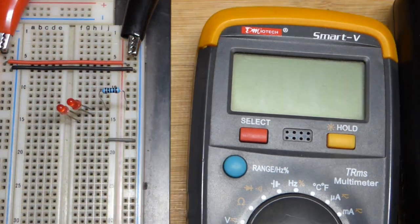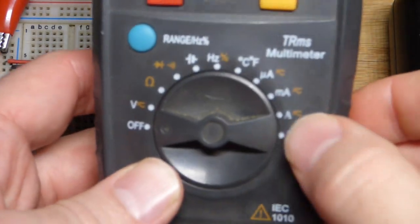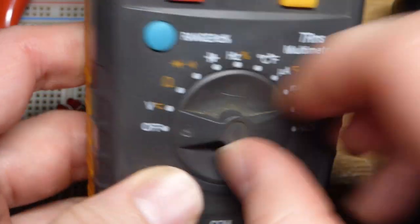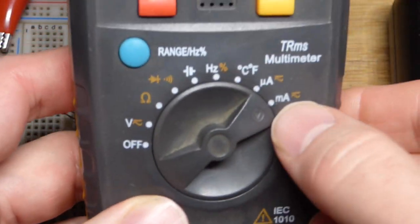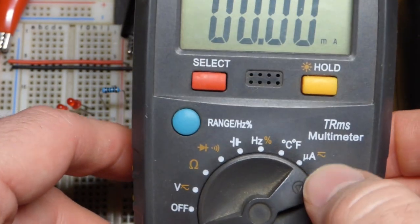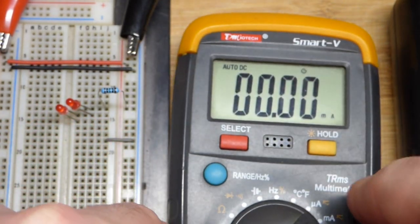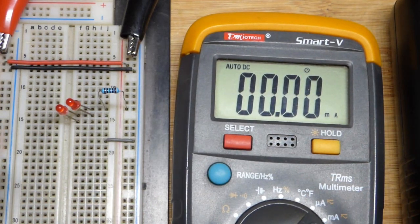If you really want to measure current more accurately, this is an auto-ranging meter. All I have to do is set it to milliamps. We calculated that this is a 10 milliamp circuit. If this had numbers, you would go higher than 10 milliamps, the next higher one.